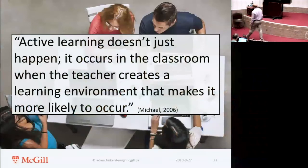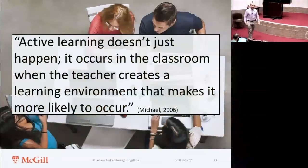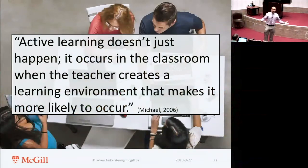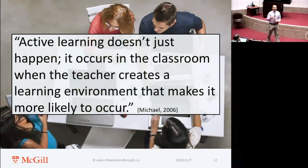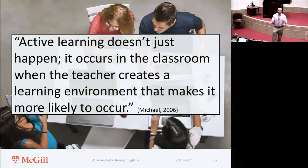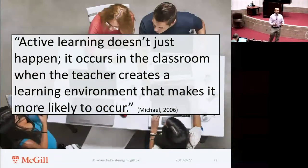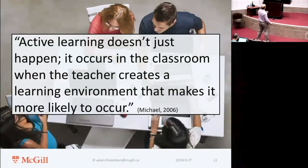Active learning isn't a magical wand either, and this is the other problem we have to think about — just saying 'I've implemented active learning, I wave my wand, everything is fabulous.' It occurs when the teacher creates a learning environment that makes it more likely to occur. Everything we do in education is a hope. We create conditions so that something will happen, give great opportunities to students, but students have to take the initiative to move forward to achieve the outcomes we want.